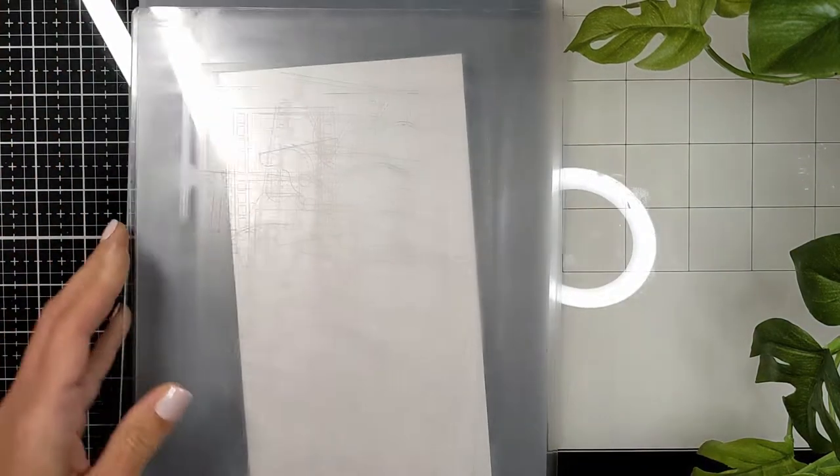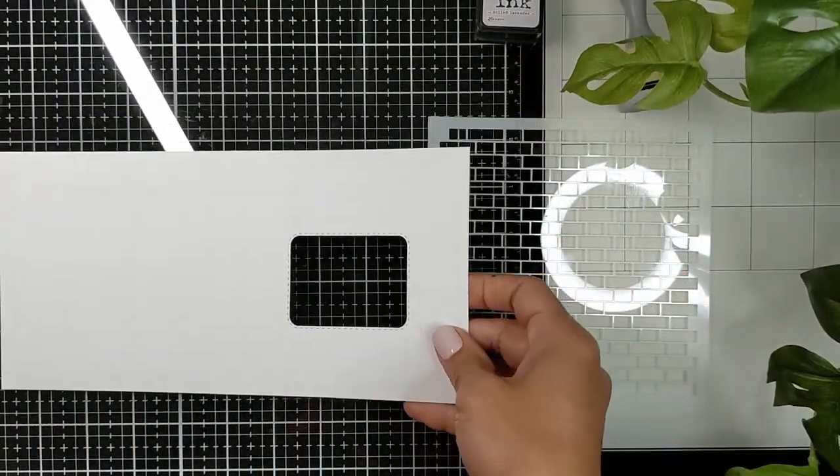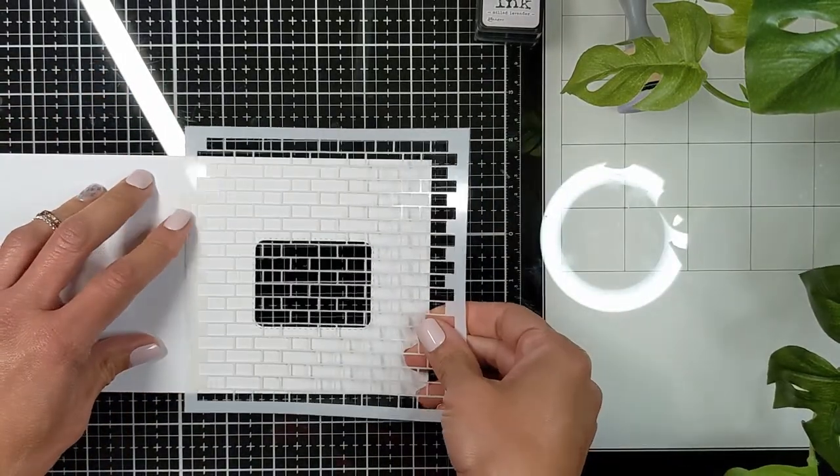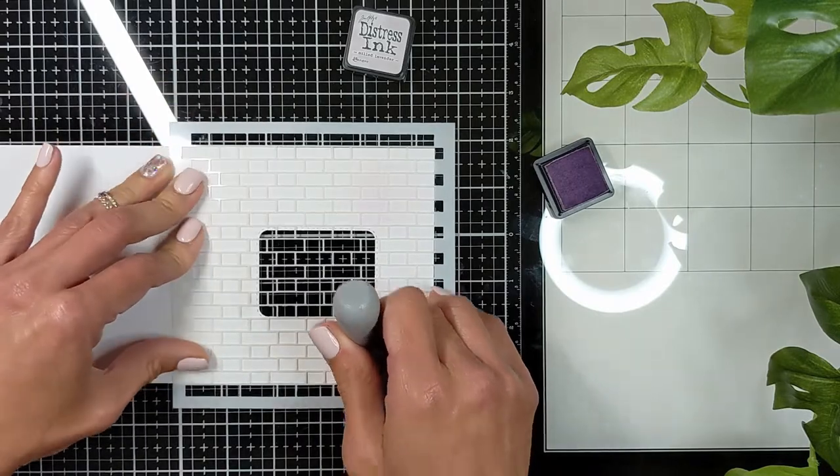To start with the window, I'm using the double stitch round rectangles from Art Impressions. Don't forget when you're cutting the front window, keep your card open so you don't cut through both layers.